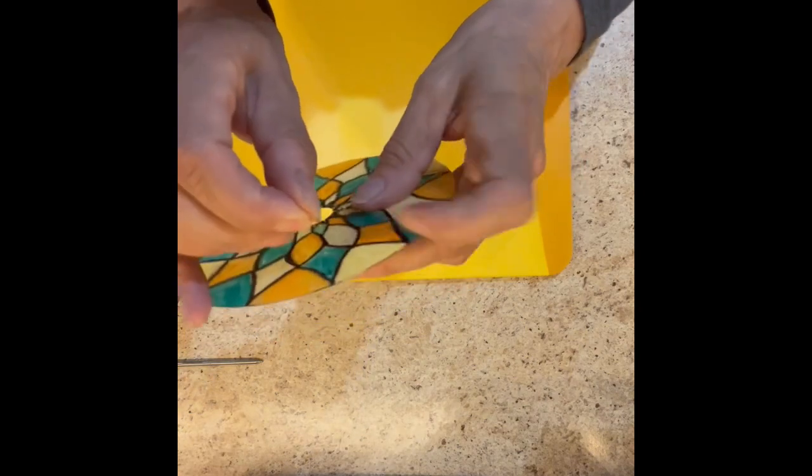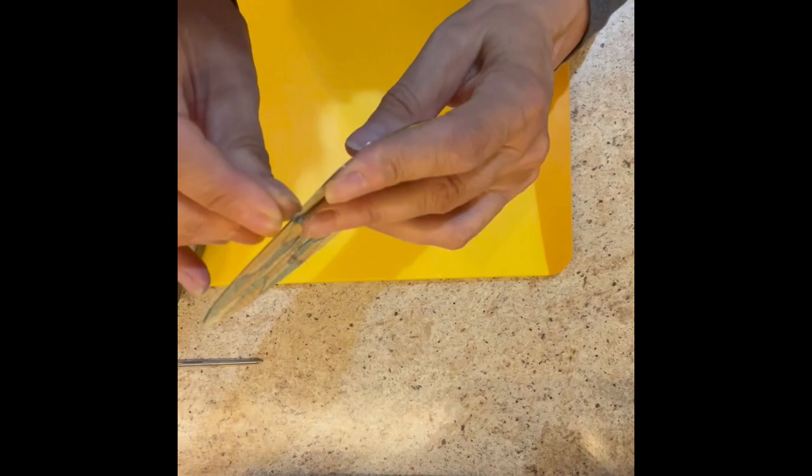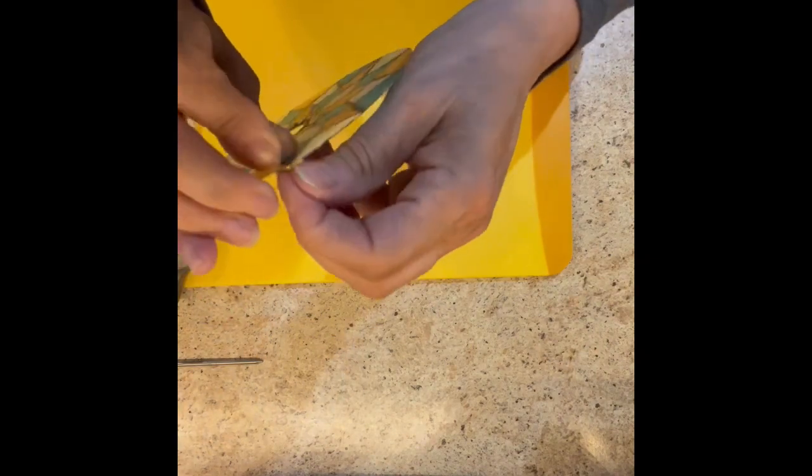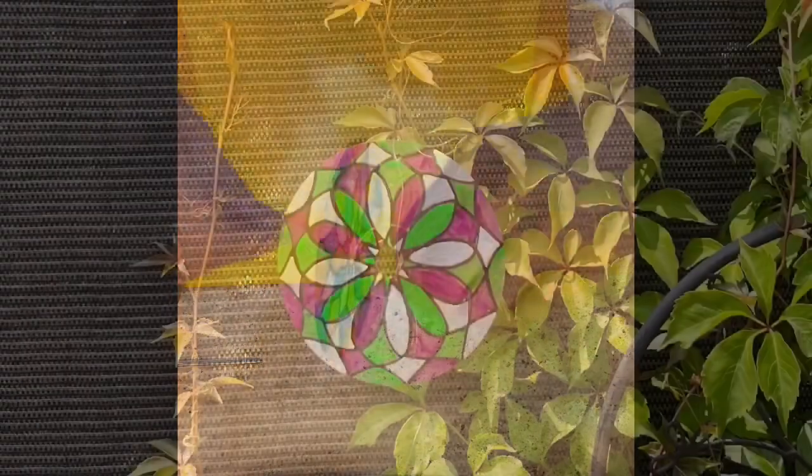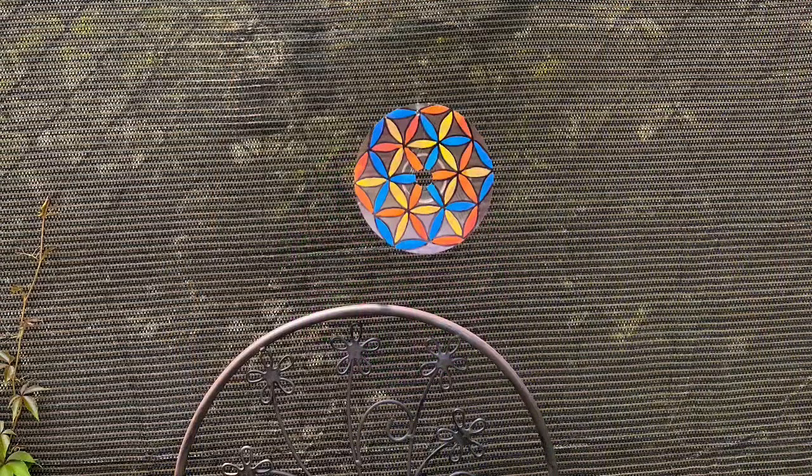Thread your fishing line through the hole and tie it into a knot. And now it's time to hang your suncatcher in your garden or in your favorite window and enjoy.